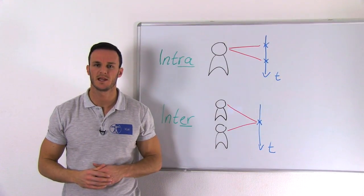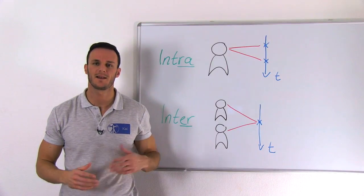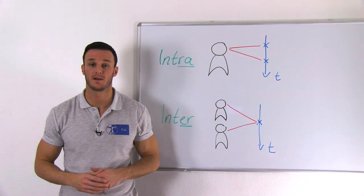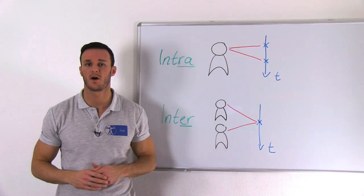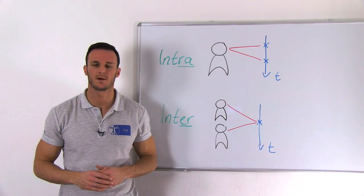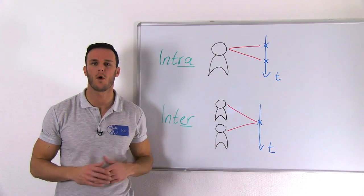We can distinguish between intra-rater reliability and inter-rater reliability. Intra-rater reliability relates to the agreement between different measurements of one person, and inter-rater reliability relates to the agreement between two or more raters.